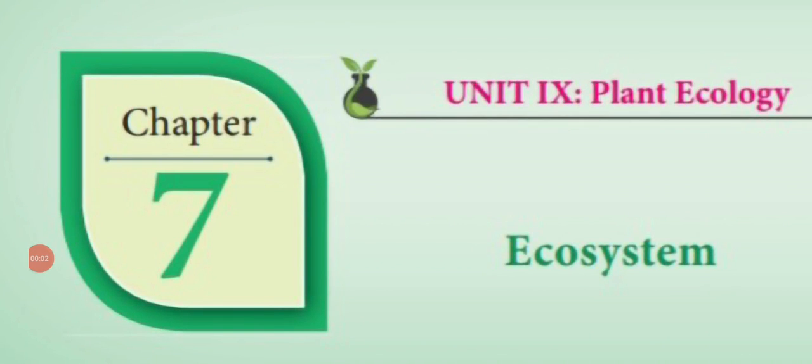Good morning students. This is 12th standard botany video class, video 6. In this video we are going to continue the unit plant ecology, chapter ecosystem. In the previous video class we have seen stratification of pond ecosystem, plant succession, causes of plant succession, and characteristic features of plant succession. Now in this video we are going to continue the topic plant succession, that is types of plant succession.